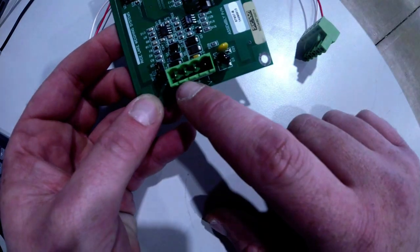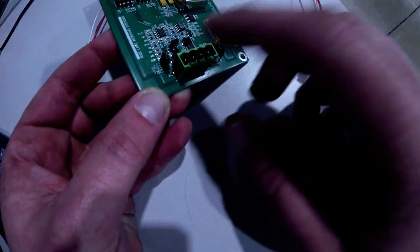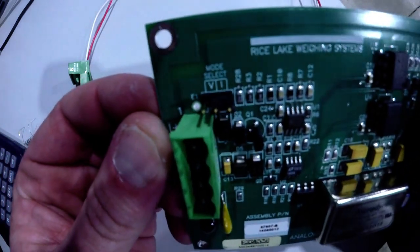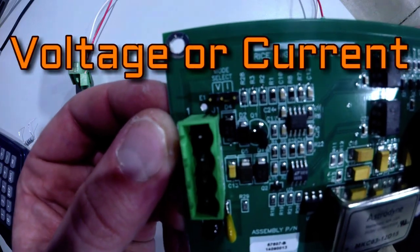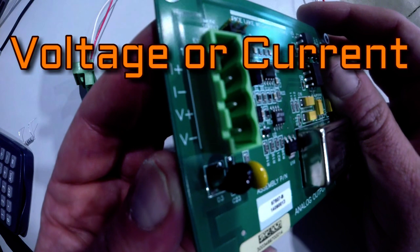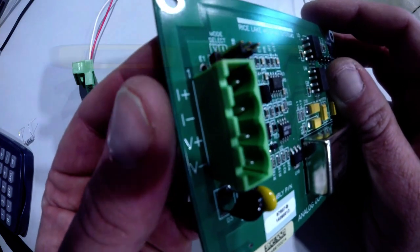Here we have our green Phoenix terminal and here we have a mode select jumper. If you can see, we change the jumper to select voltage or current input.